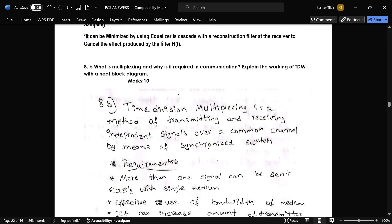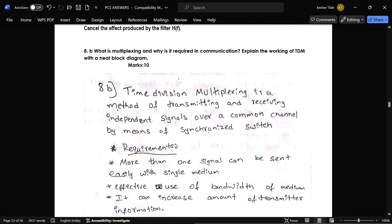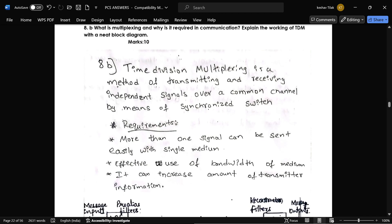And next question is what is multiplexing and why it is required in communication? Explain the working of TDM with a neat diagram. So TDM is time division multiplexing.